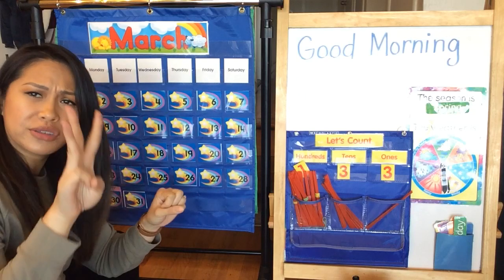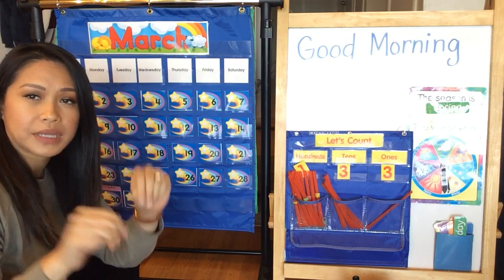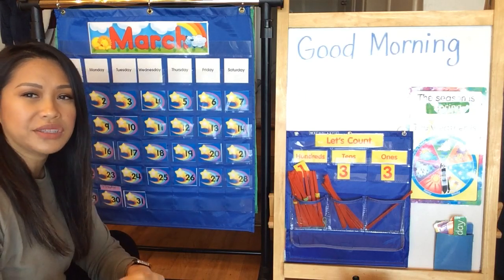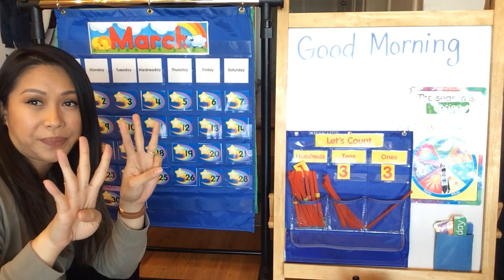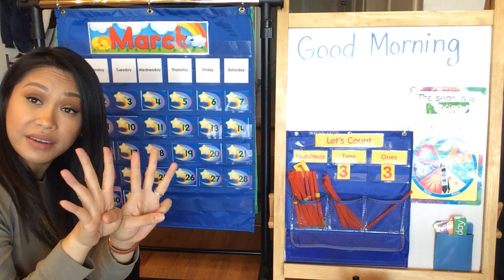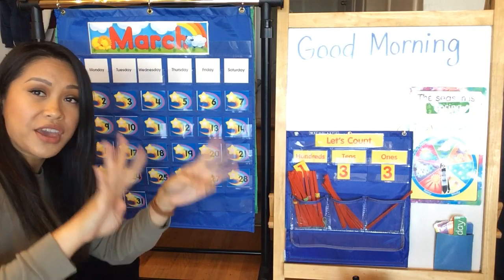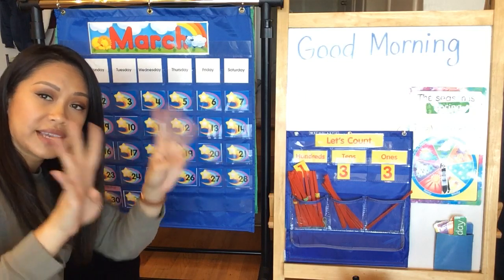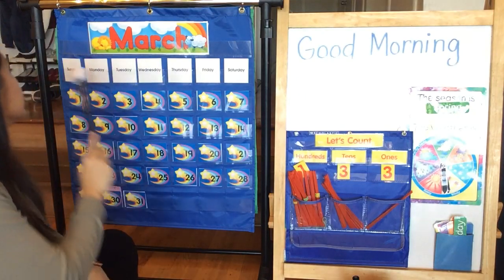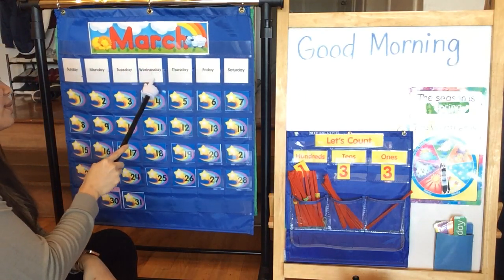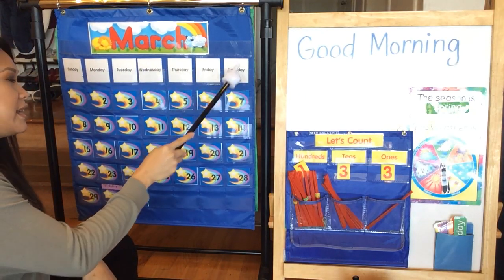Great job. Remember, you can do seven in different ways, different combinations. I'm going to do a line like this today. Four and a three make seven. Ready? There are seven days, there are seven days, there are seven days in a week. Sunday, Monday, Tuesday, Wednesday, Thursday, Friday, Saturday.